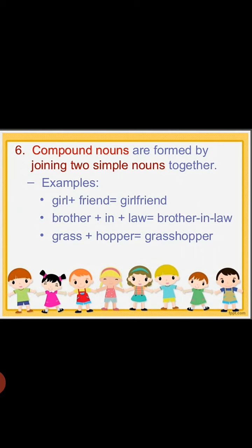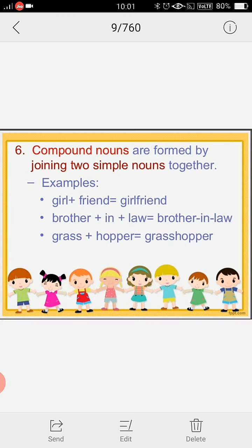Compound nouns are formed by joining two simple nouns together. For example: girl plus friend equals girlfriend; brother plus in plus law equals brother-in-law; grass plus hopper equals grasshopper. Two different nouns come together in one combined word — that is the compound noun. Thank you, students.